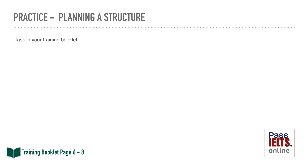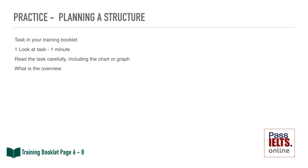First of all, let's look at the task in your training booklet. The first thing you have to do is look at the task carefully — read it very carefully, including the actual chart, table, or graph itself. Then decide what is the overview and what are the main features. You should take about a minute to do this, and don't forget you're only thinking about it here, not actually writing anything.